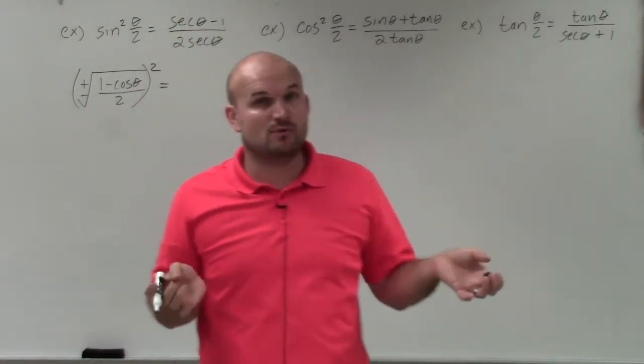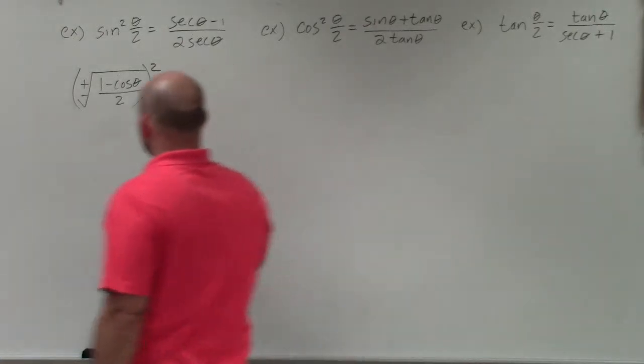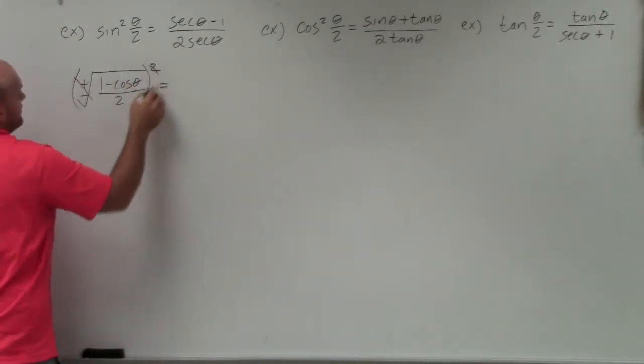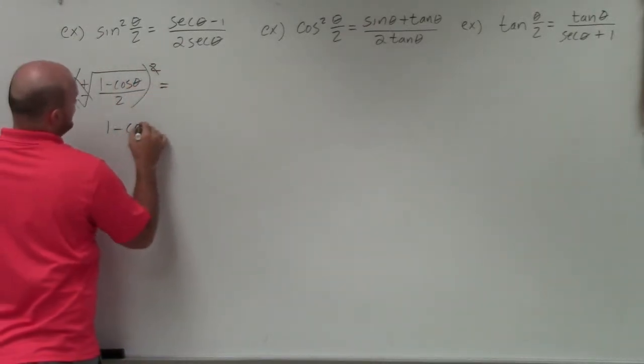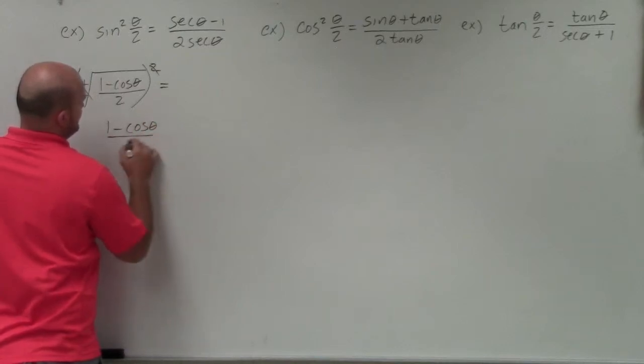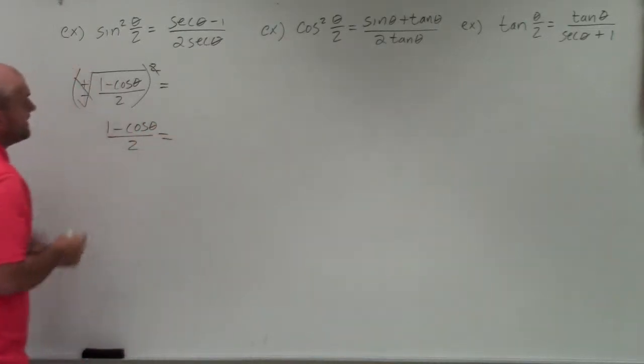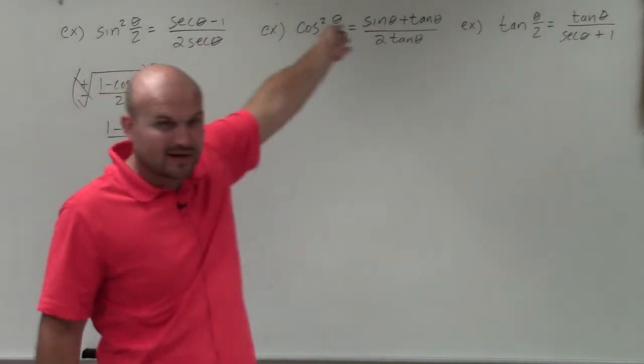Remember, the square root and squaring are inverse operations. So when I go ahead and square this, those undo each other, and I'm left with 1 minus cosine of theta divided by 2. We want it to look like this on the right hand side.